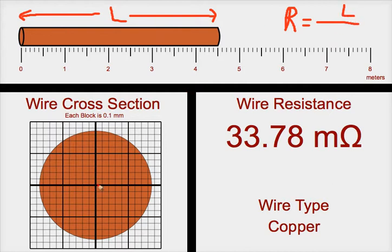The second factor is the cross-sectional area of the wire. Since most wires are circular, we find the area by taking the radius of the wire, squaring it, and multiplying by pi — using our formula for the area of a circle. As the area gets bigger, that gives more space for the electrons to travel through.